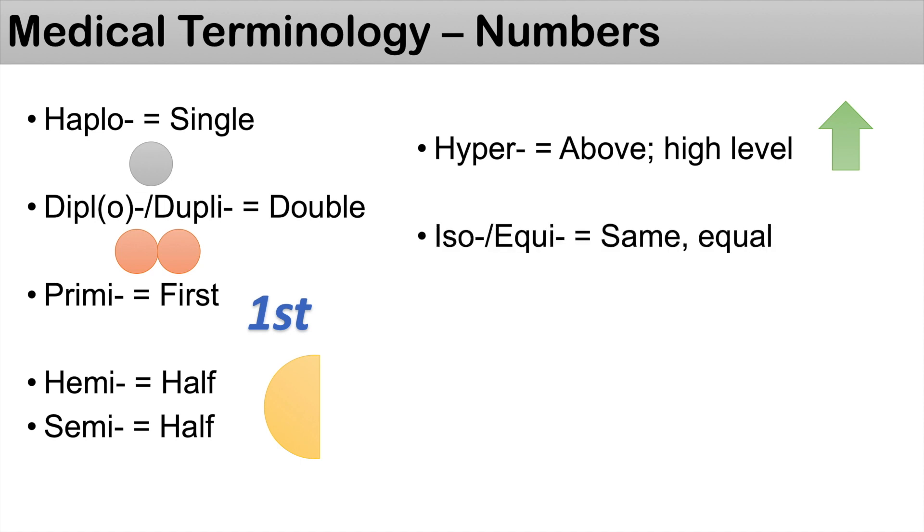A prefix that stands for something that's equal, something that's the same includes iso or equi. So you can think of isotonic, you can think of equitable.